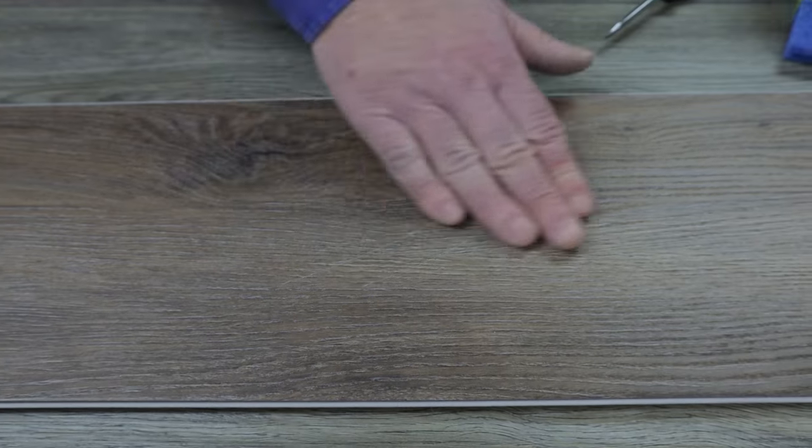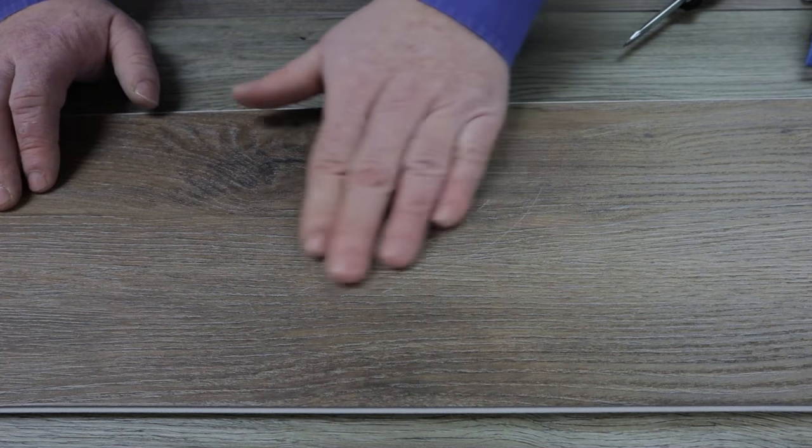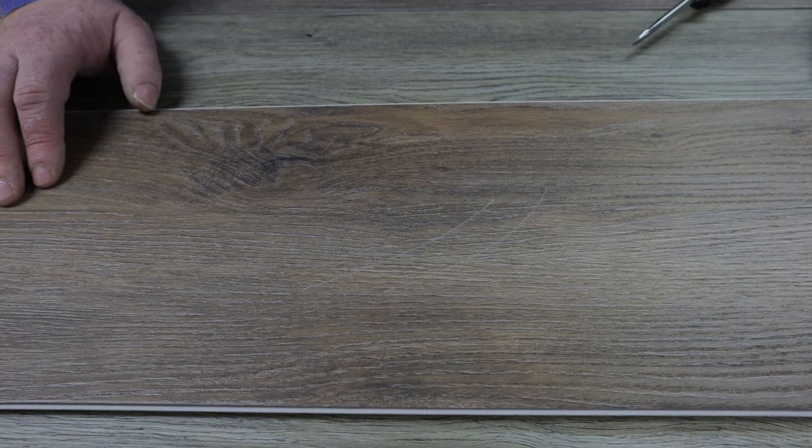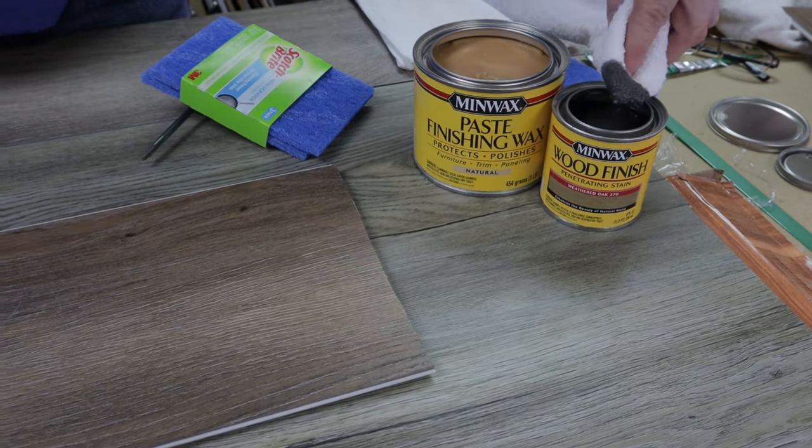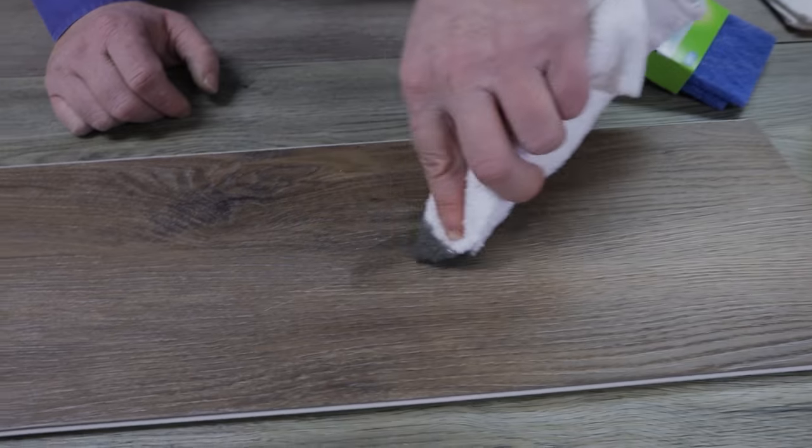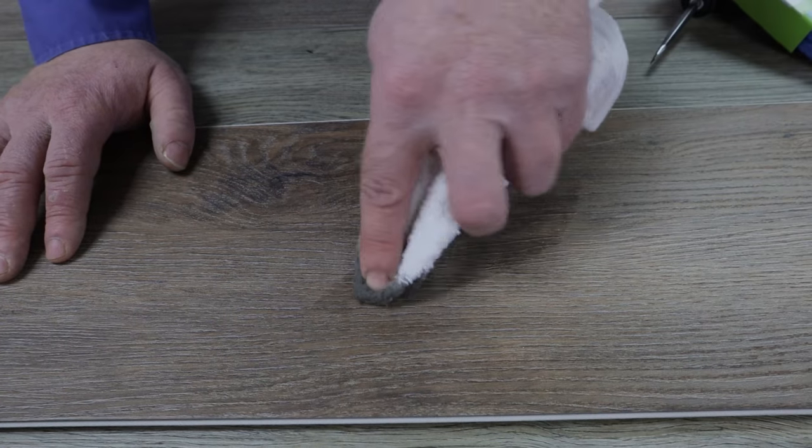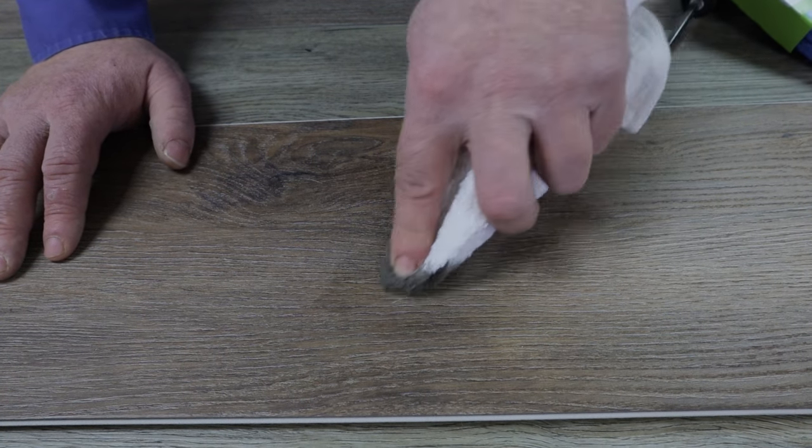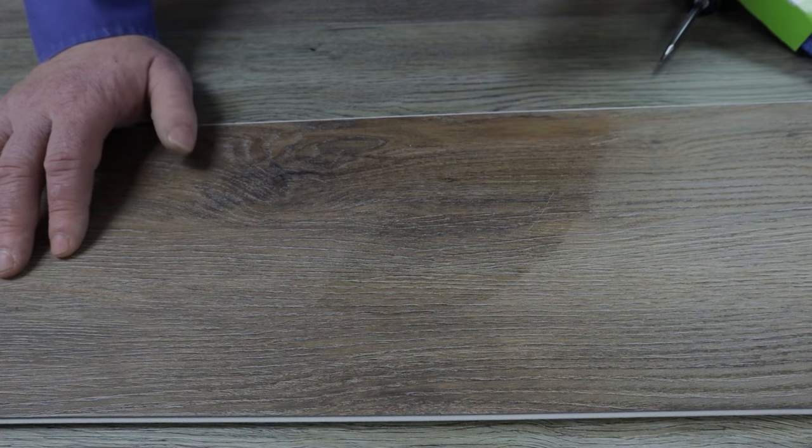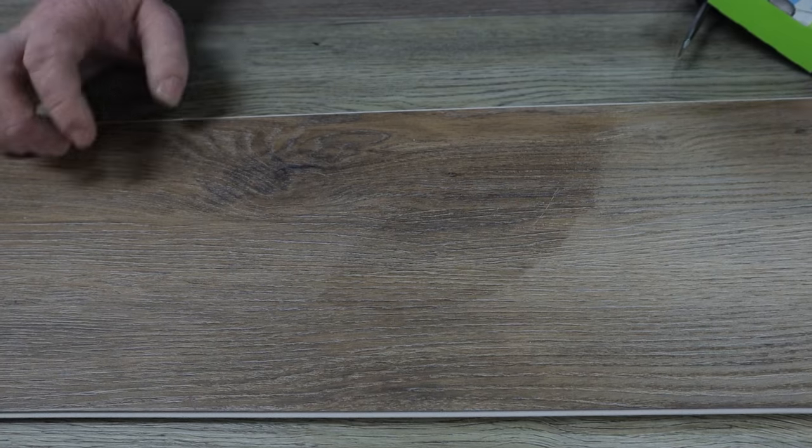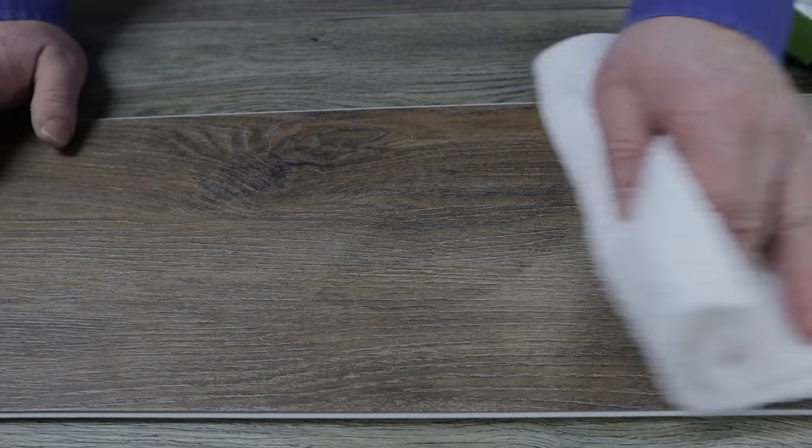Once you get the burr and roughness off and it feels nice and smooth, you're going to use the stain. Dip a rag into a little bit of the stain and rub it onto the flooring. This helps clean out the scratches and gives them some color. As you can see, it's already looking better. Take another clean rag and wipe it off.